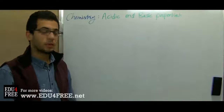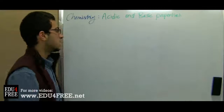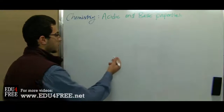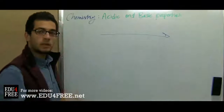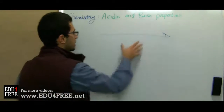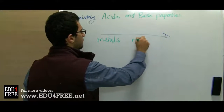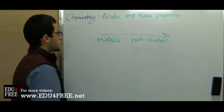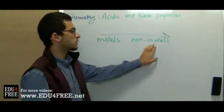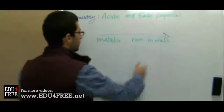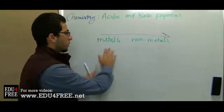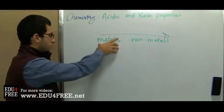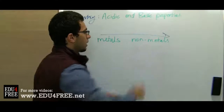Let's see how the acidic and basic properties change according to the distribution of elements inside the periodic table. Metals are found before the nonmetals in the periodic table as we go from left to right, because the atomic number of metals is less than that of nonmetals. As we move from left to right through the periods, the acidic property increases because we approach the nonmetals, or the basic property decreases as we go farther from the metals, since metals produce basic oxides and nonmetals produce acidic oxides.